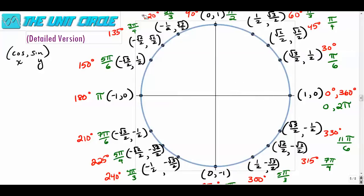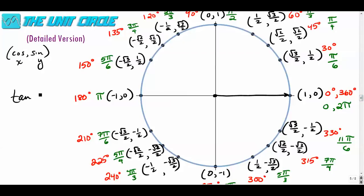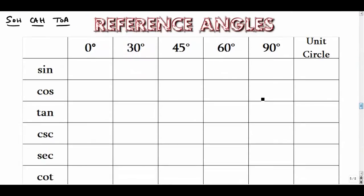Starting with the sine of zero: the sine of zero is zero because we haven't moved up or down at all. The cosine of zero is one — it's the x-value right there. The tangent, which is sine divided by cosine, is zero divided by one, so the tangent of zero degrees is also zero.